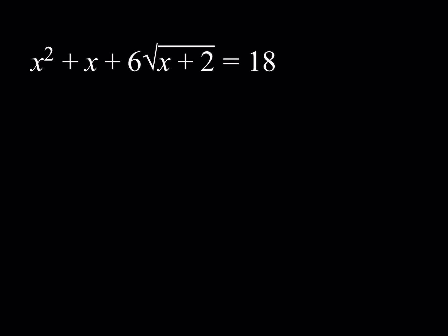Now, typically with radical equations, if you isolate the radical and square both sides, we'll end up with a quartic equation, which is sometimes not very easy to solve. So we'll be using a slightly different approach here. We'll use substitution.